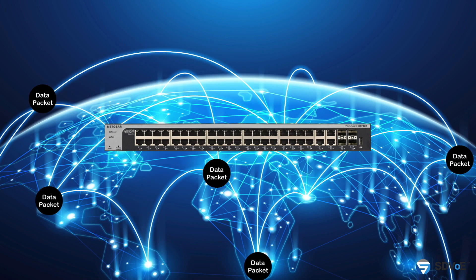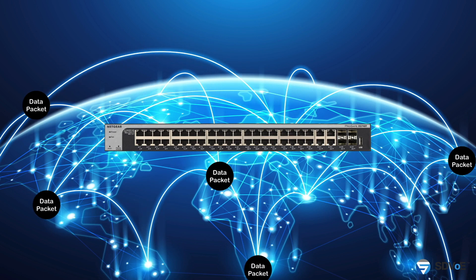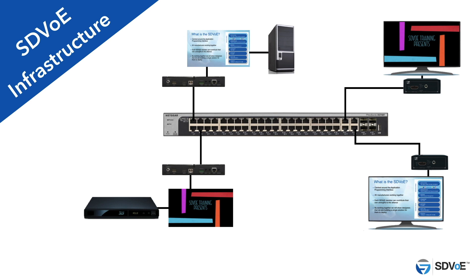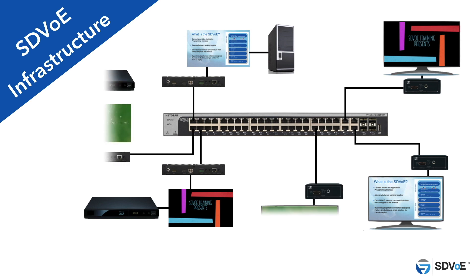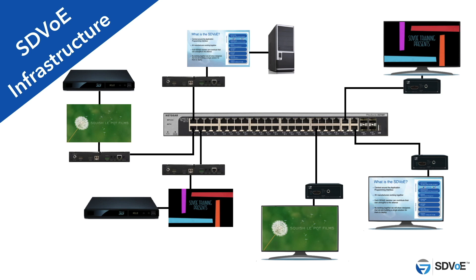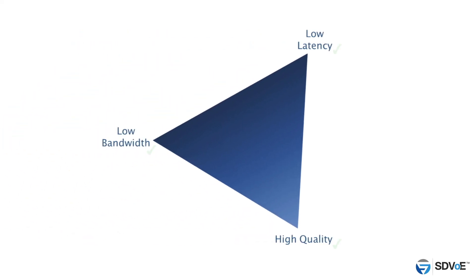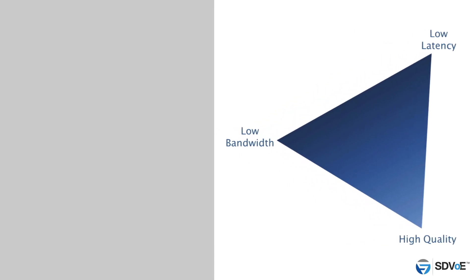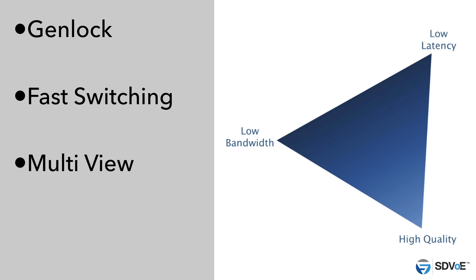Rather than think of 10G as an Ethernet system which needs to be in place already, think of it as the hardware which does the same job as the matrix switch. When you needed new matrix hardware, you expanded your infrastructure, and with SDVoE it's exactly the same. Not only can SDVoE match the same latency performance and quality of the matrix switch, there are a number of built-in advanced processing features which the matrix switch could never offer, and this course will introduce you to them.